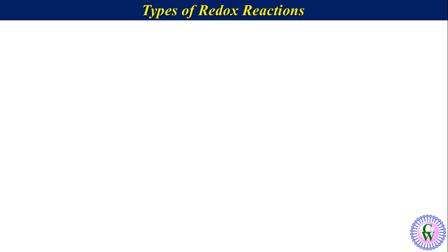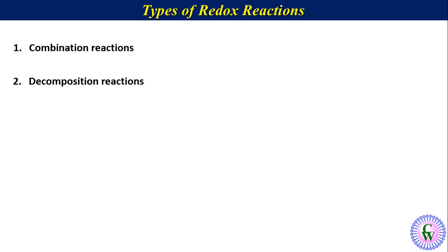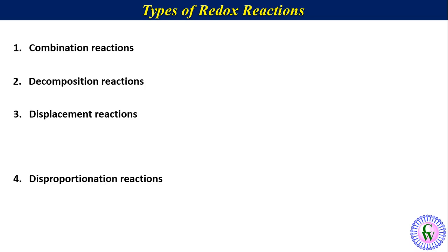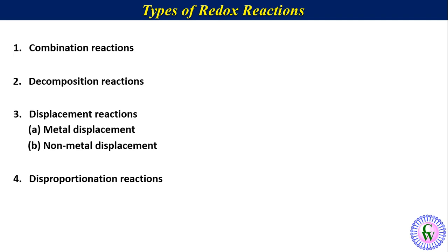Now, let's come to the last point: types of redox reactions. These are combination, decomposition, displacement, and disproportionation reactions. Displacement reaction is of two types: metal displacement and non-metal displacement reaction. Let's take them one by one.